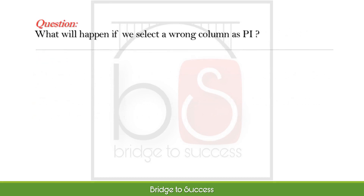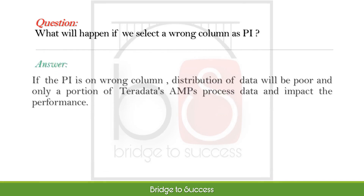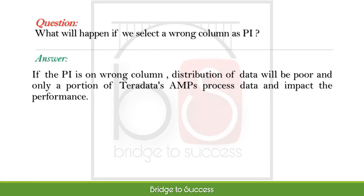What will happen if we select a wrong column as PI? If the PI is on the wrong column, distribution of data will be poor, and only a portion of Teradata's AMPs will process data, impacting performance.